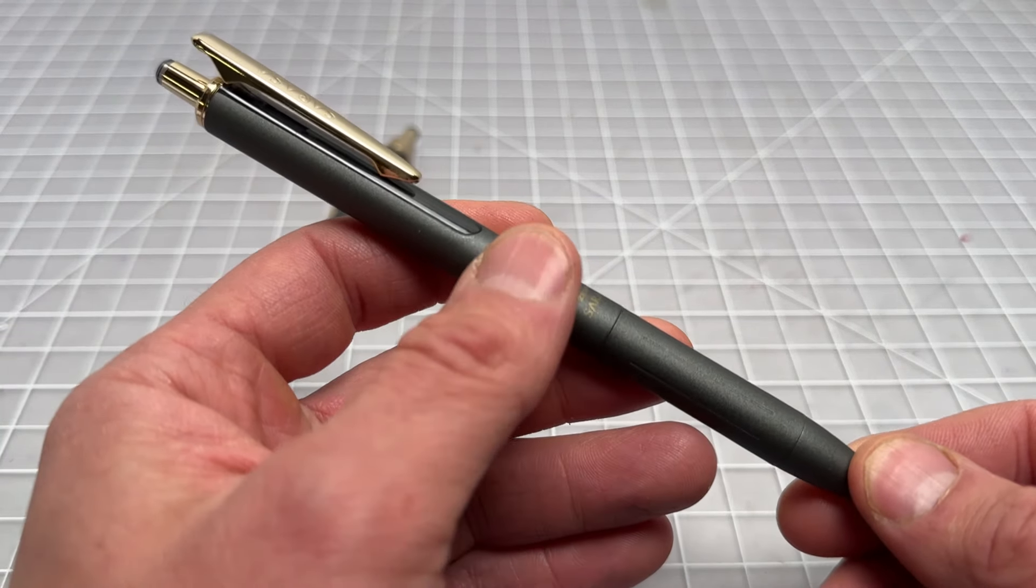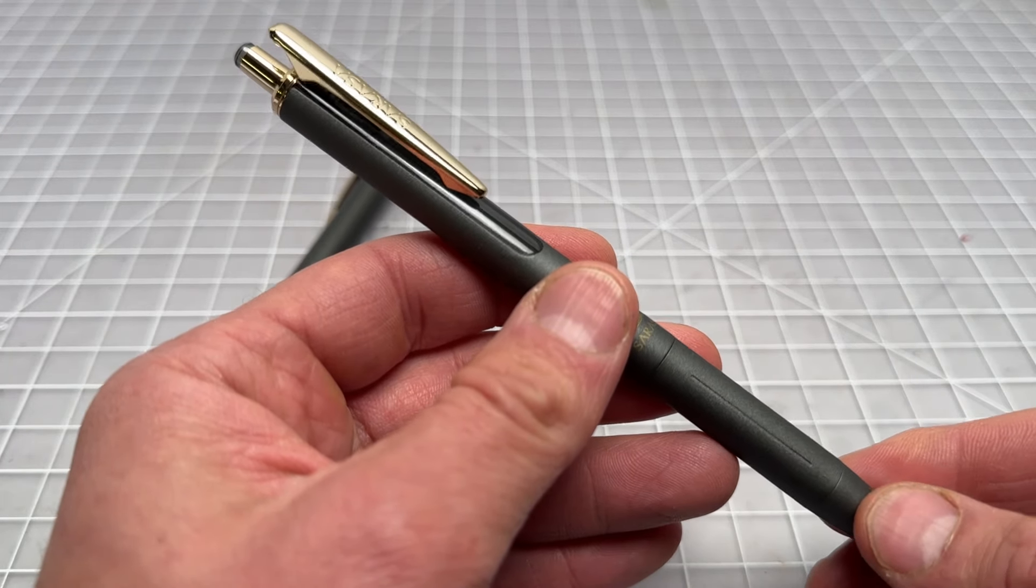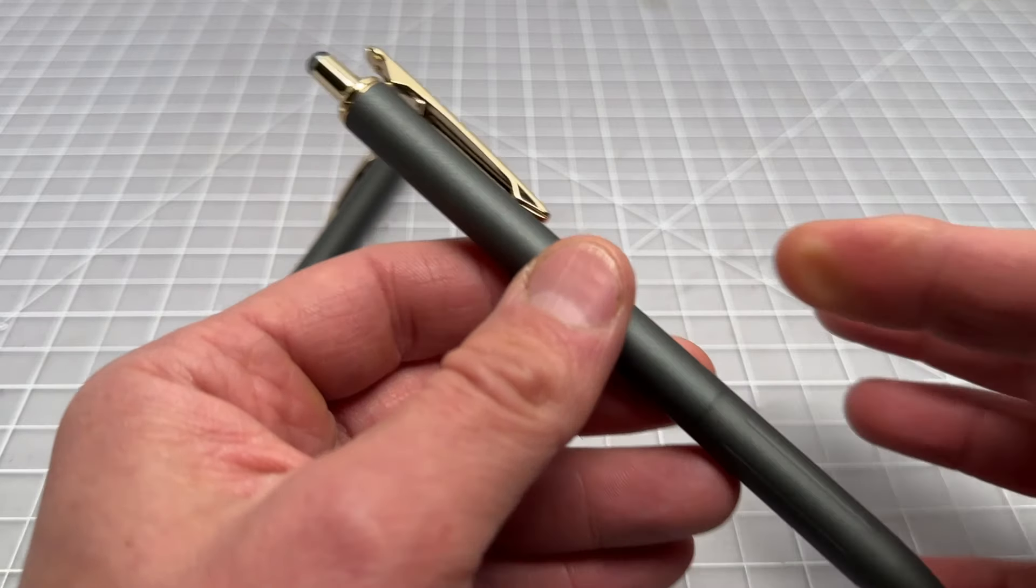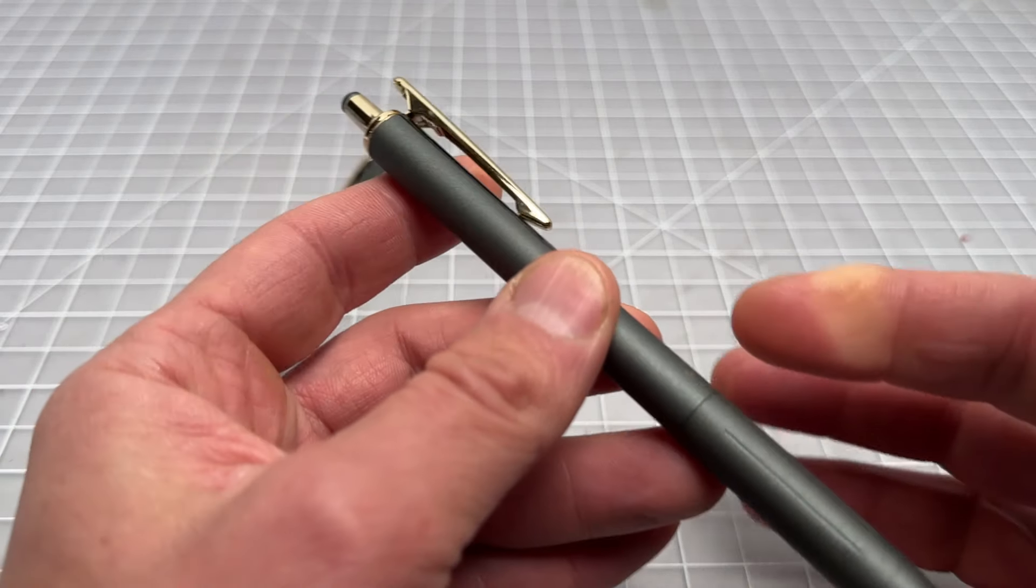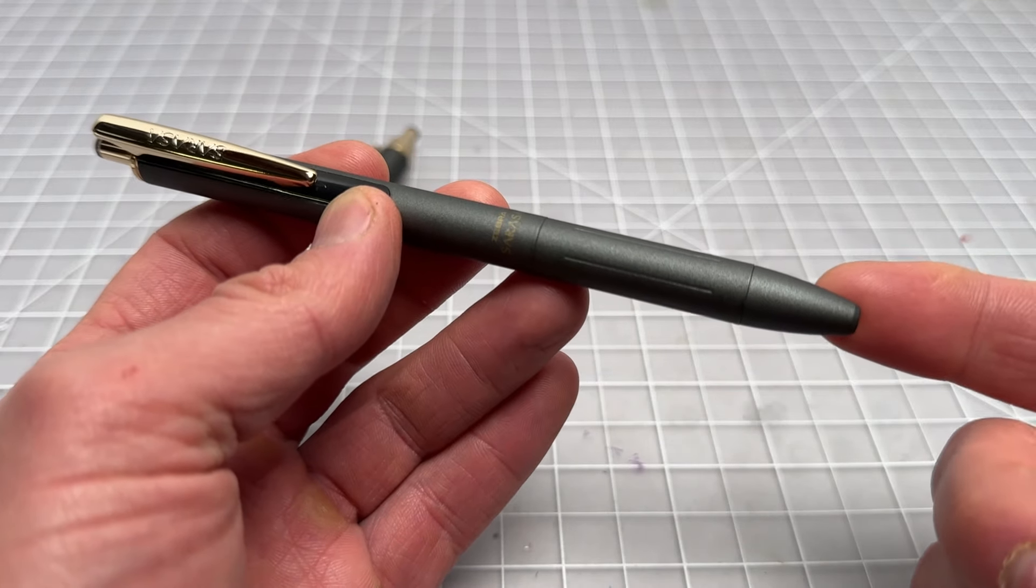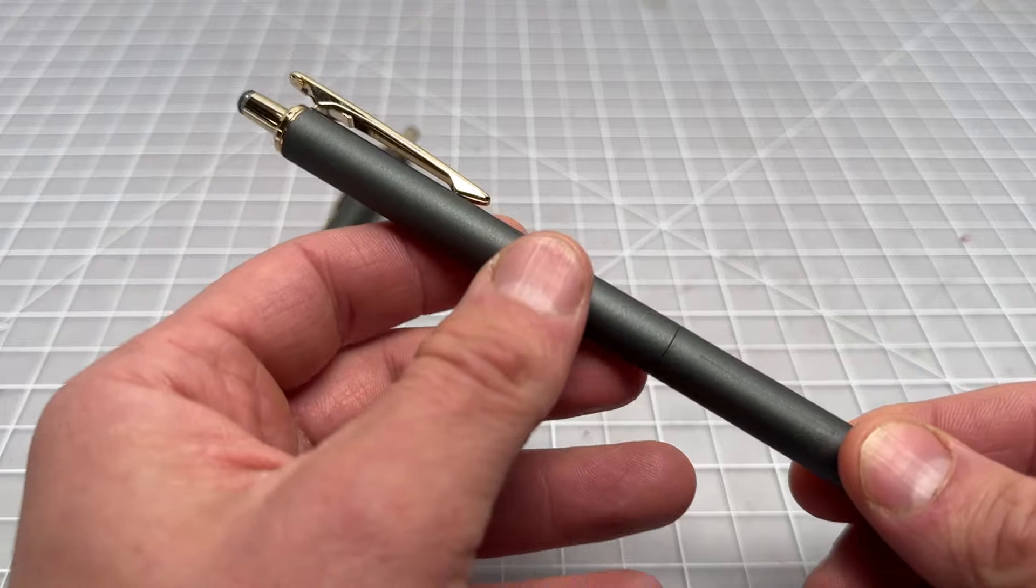Back here I actually have an original from like 2020 or 2021, the Sarasa Grand Vintage which is all metal with the vintage color scheme. That's why you have a faded black and then it has the vintage colors which are like gray black and green black and stuff like that.